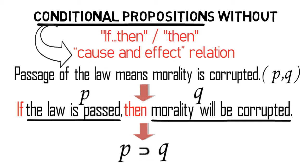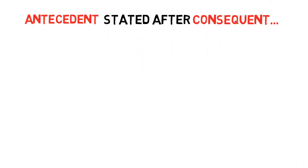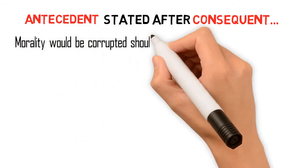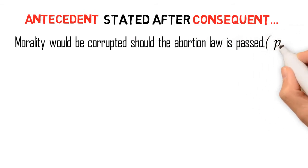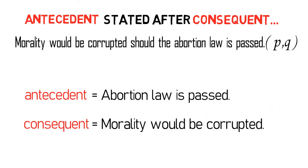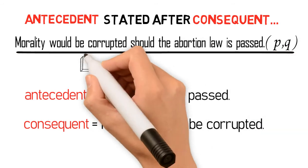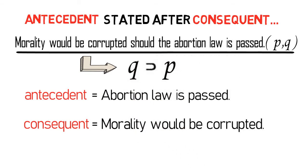Another important thing to note is that sometimes the antecedent is stated after the consequent. When this happens, we have to symbolize the proposition accordingly. Let's take this example: 'Morality would be corrupted should the abortion law be passed' — P, Q. If we analyze this proposition, it is clear that the antecedent is 'abortion law is passed,' and the consequent is 'morality would be corrupted.' Hence, the proposition is symbolized as Q then P.